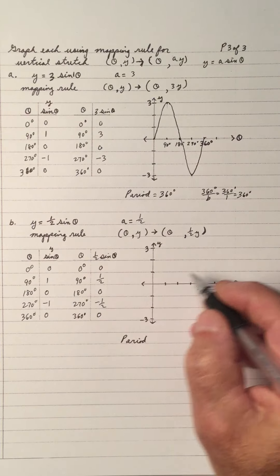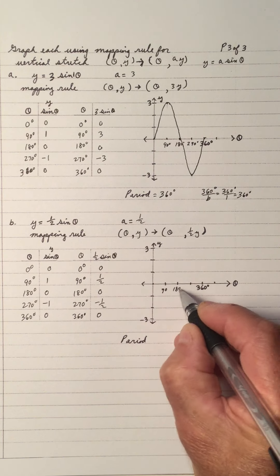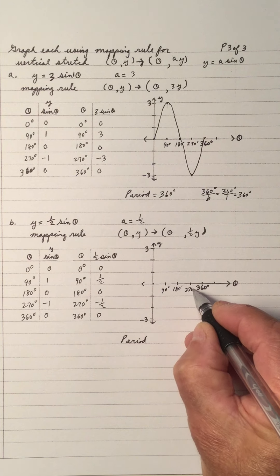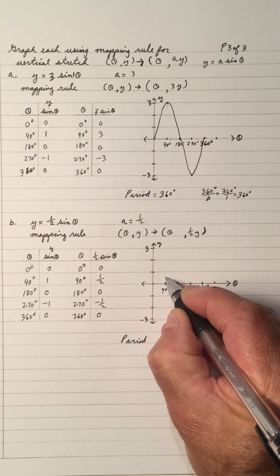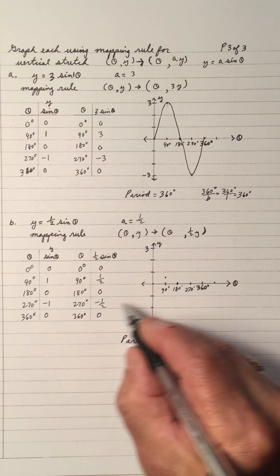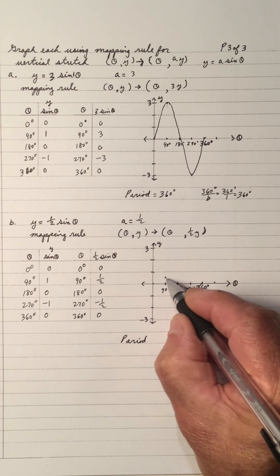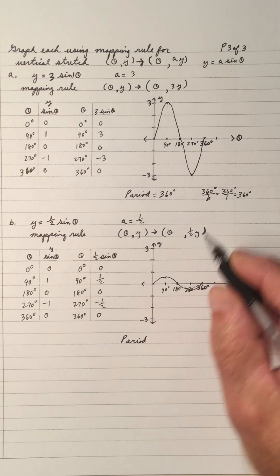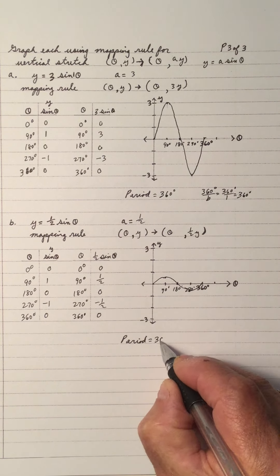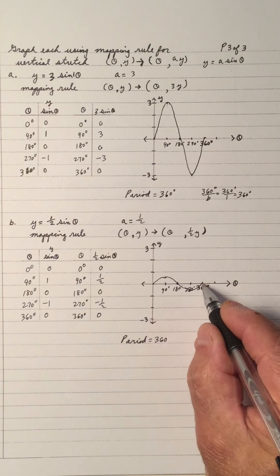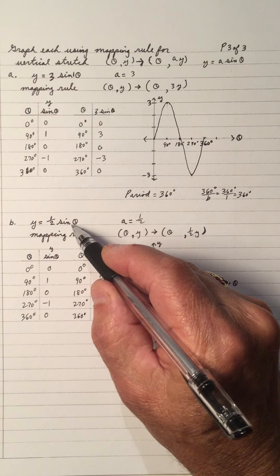So the height is one half — the stretch is one half — but the period is still 360°. From 0 to 360 is one cycle, one sideways S. Notice the height is three in the first graph because there's three times the y, and the height here is one half times the y, so it's half as high.